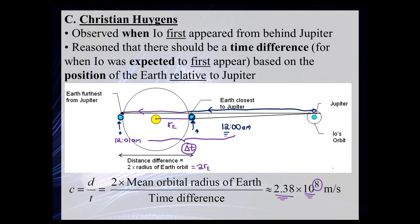The inaccuracy is likely due to the model's assumptions — for instance, assuming Jupiter doesn't move while Earth completes half its orbit. Jupiter's orbital period is about 12 years, so it moves only a little during Earth's half-year transit, but this may account for some error. A lot of the error probably also came from not having sophisticated enough equipment to properly measure the time differences at that point in history.